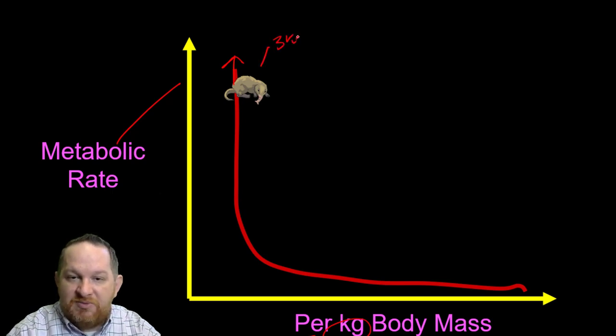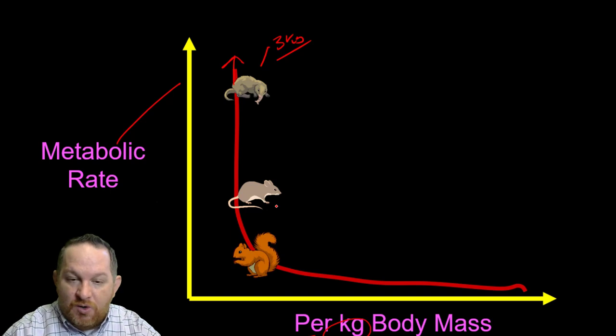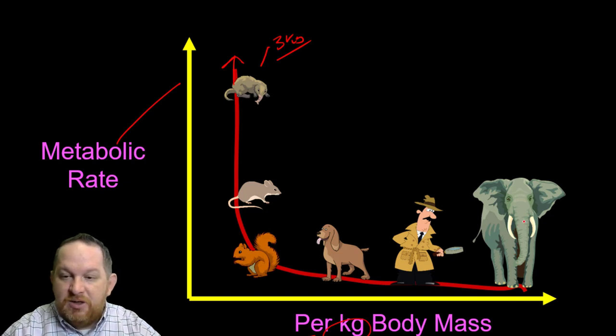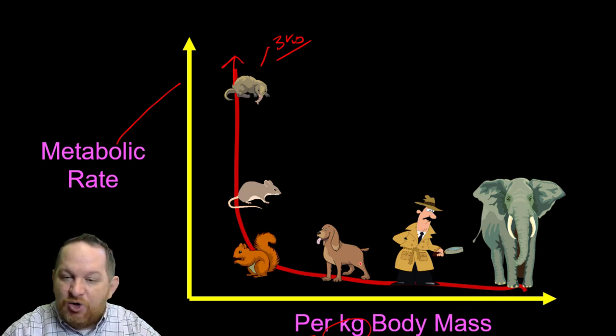Let's say this organism was three kilograms. For each of those three kilograms of mass, each has a very high metabolic rate. As organism size increases from a shrew up to a field mouse, up to a squirrel, dog, human, and then elephant, the per kilogram body mass metabolic rate goes down for these larger organisms.